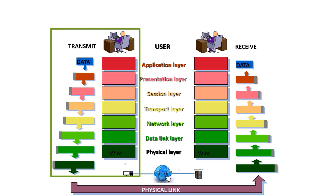Data is transmitted by the user. The data starts at the application level, then it goes down to the presentation layer, the session layer, the transport layer, the network layer, the data link layer, and finally layer one, our physical layer or connection.